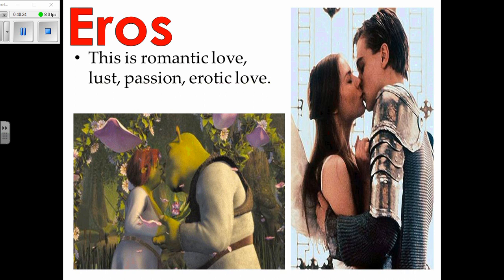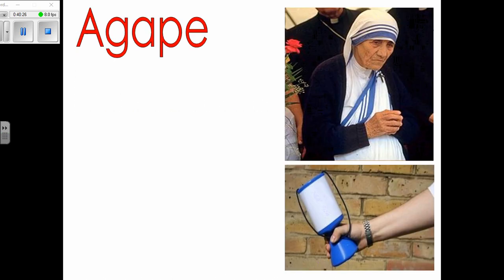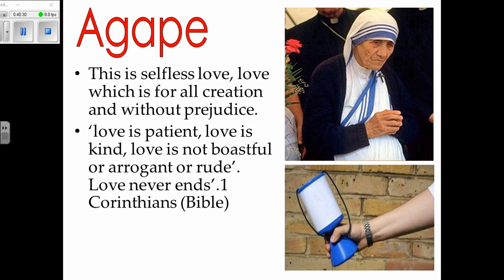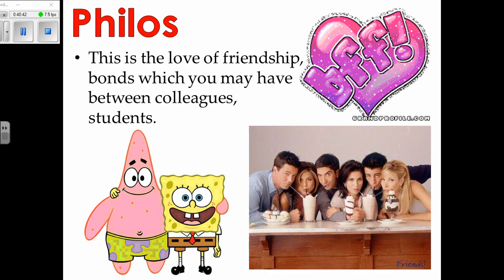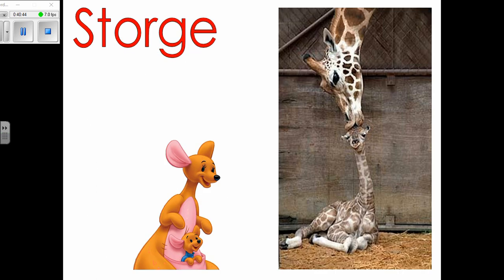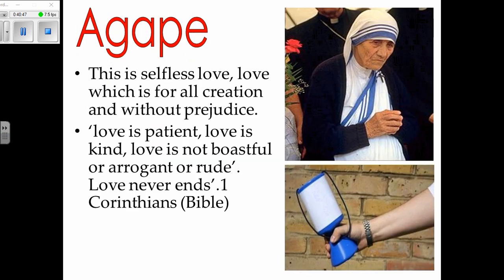The next is eros — erotic, romantic love, lust, passion. Again this won't work because the scope is small — you only really love one other person. In these three forms of love you expect something back, whether because of feelings, family ties, or getting on with the person.